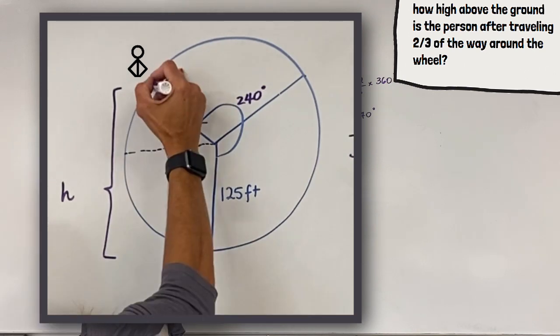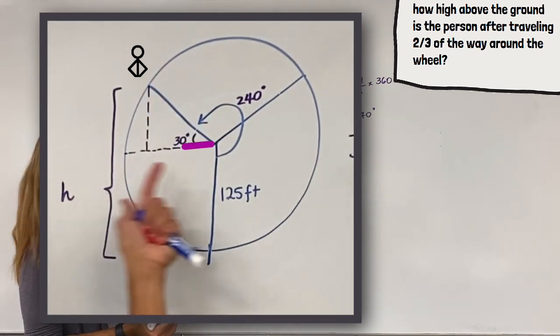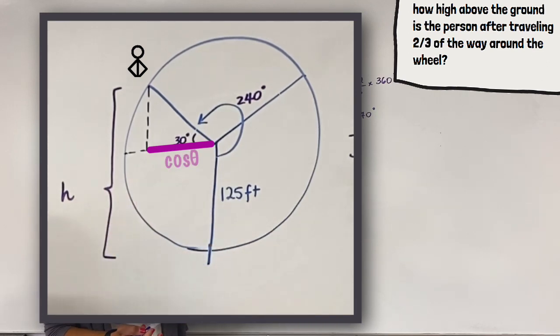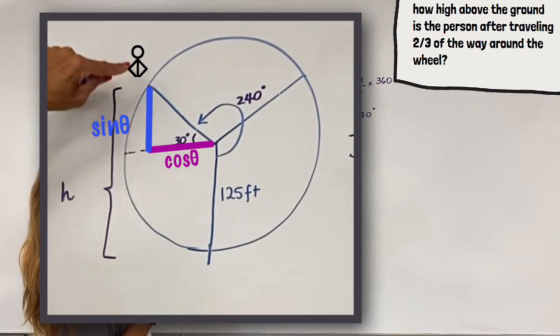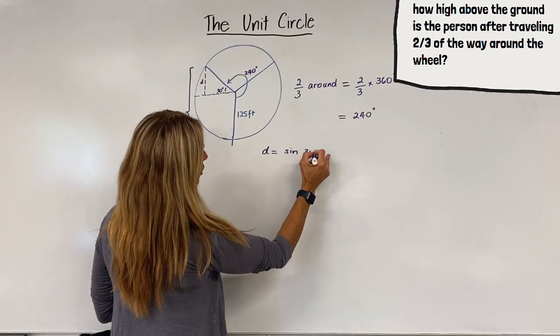We want the height. And in the previous video, we discussed that the horizontal measurement is given by cosine of the angle. The vertical measurement is given by sine of the angle. So this missing distance here can be determined sine of 30 degrees.